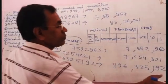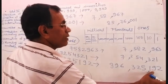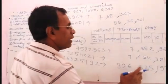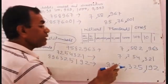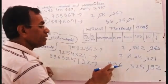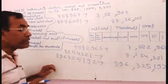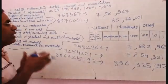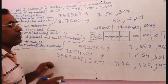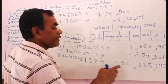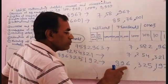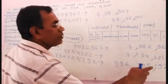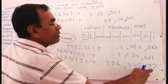Now I am reading the place values: ones, tens, hundreds; one thousand, ten thousand, hundred thousand; one million, ten million, hundred million. So you will read this number according to the international place value chart as: eight hundred and ninety-six million, three hundred and twenty-five thousand, one hundred and ninety-two.